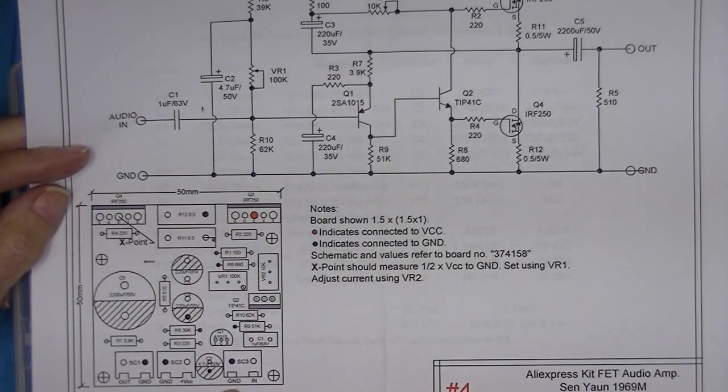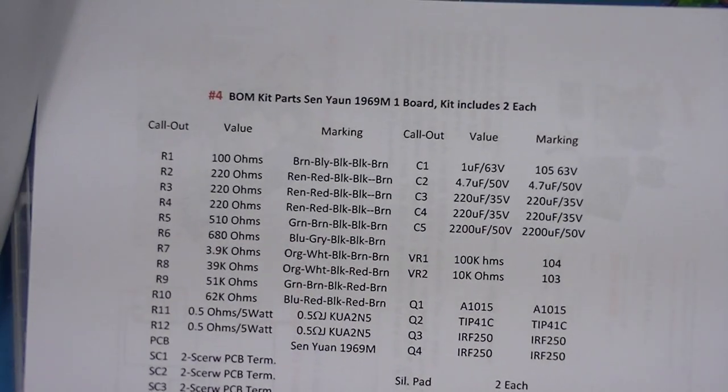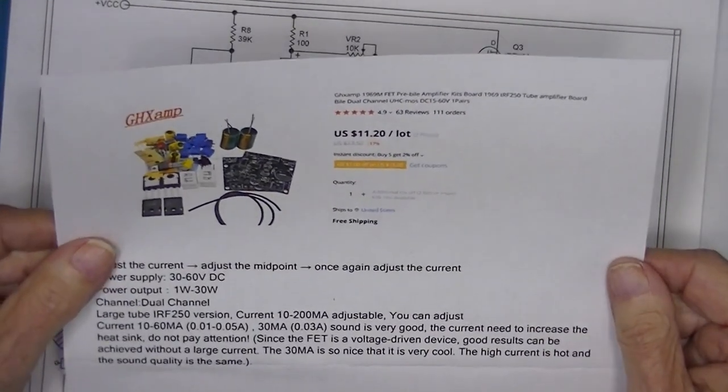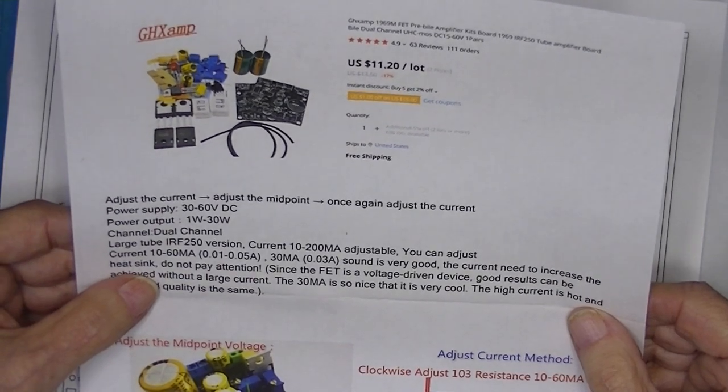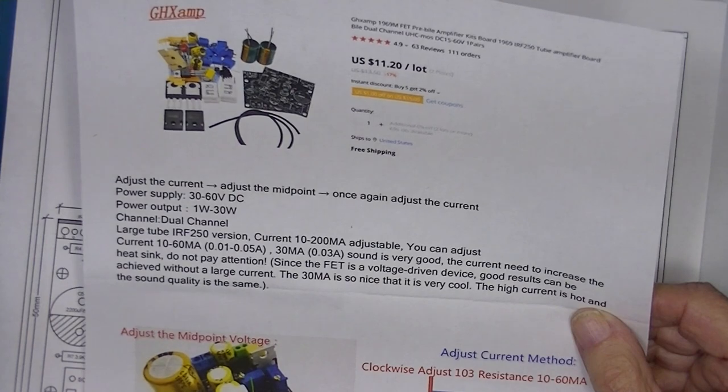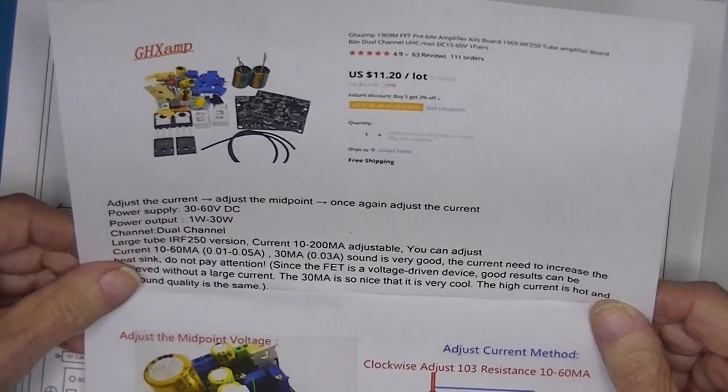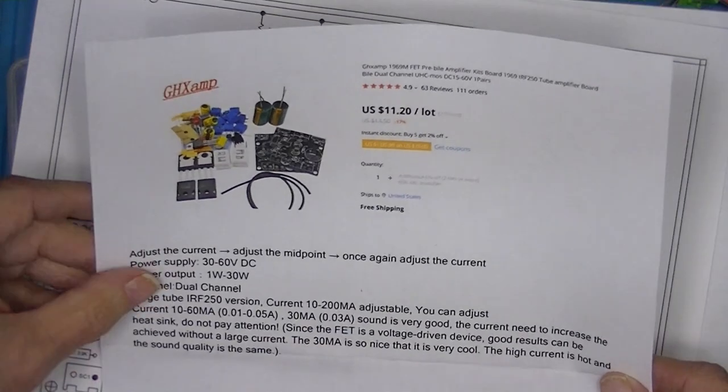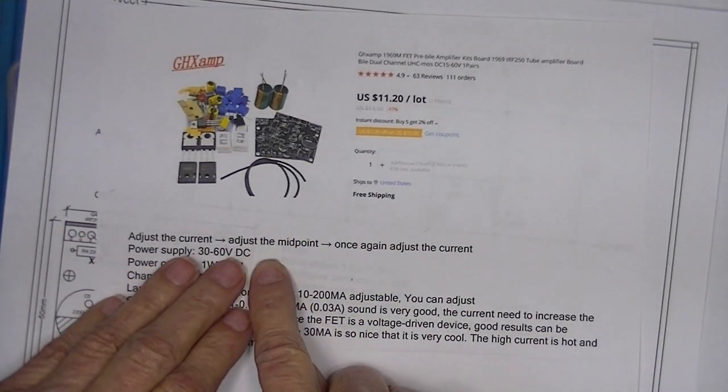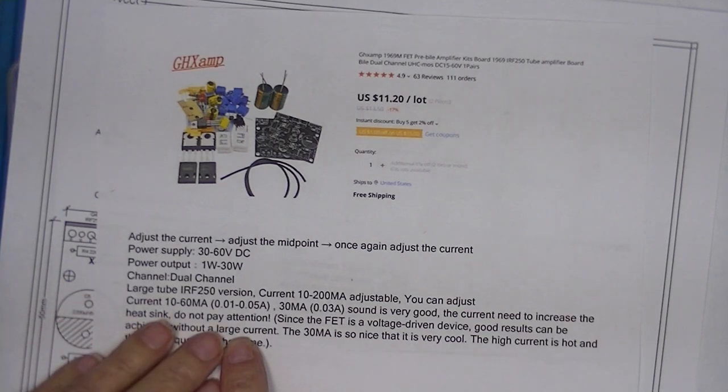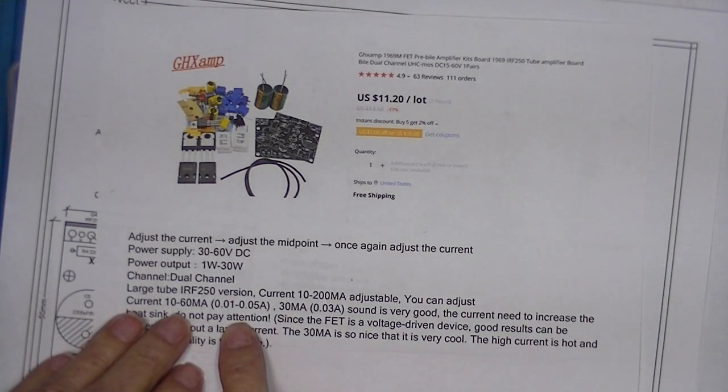Still only two signal capacitors, one in and one out. The board, again like amplifiers one and two, is 50 millimeter square. I have a bill of materials here. There are instructions to adjust the midpoint, that's the X value, and adjust the current. It doesn't say to what.